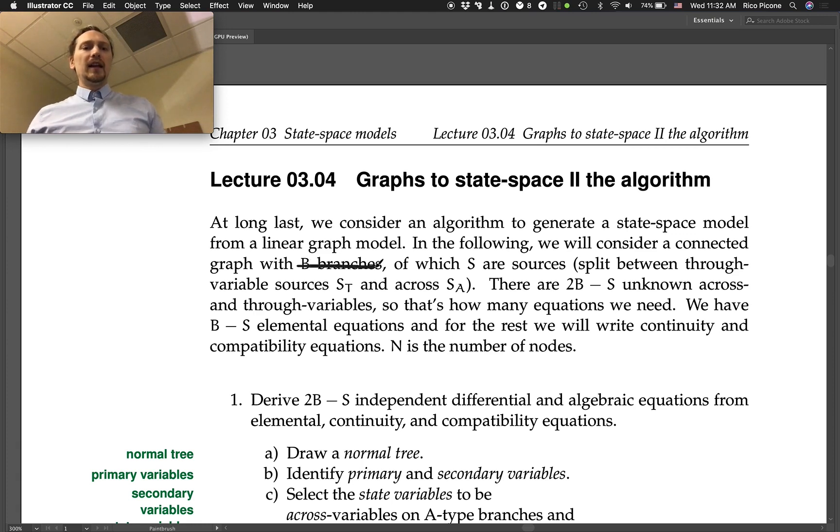We're doing this again: e edges, of which s are sources split between through-variable sources st and across-variable sources sa. There are 2e minus s unknown across and through variables, so that's how many equations we need.